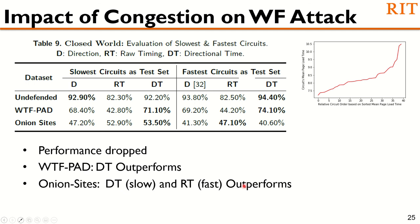Our evaluation shows that attack performance dropped across all settings for all datasets when we took account of congestion. If the victim is on the slowest circuits, the attack effectiveness is relatively worse than if on the fastest circuits. For WTF-PAD traffic, directional timing outperforms for both settings. For the undefended dataset, direction only outperforms when the test set is from the slowest circuit. For onion sites, directional timing outperforms when the test set is from the slowest circuits.